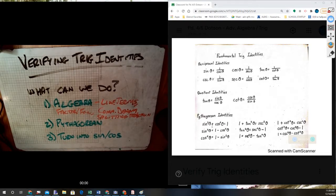But if all else fails and you can't find anything else you can possibly do, you can look at turning into sine and cosine. Meaning anything that doesn't have a sine or cosine, so like tangent, for example,